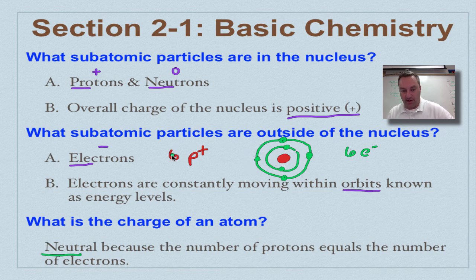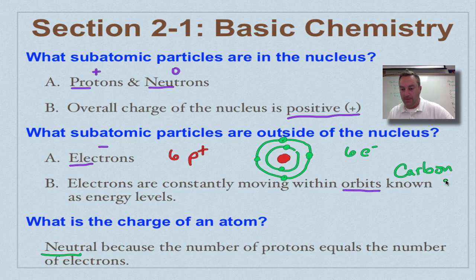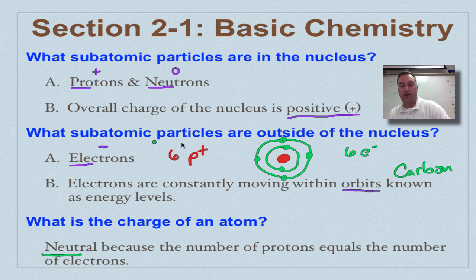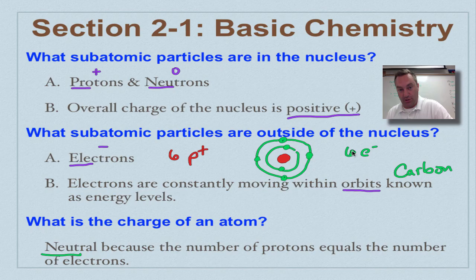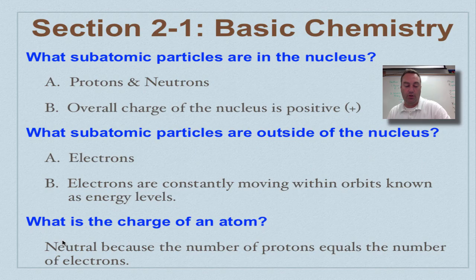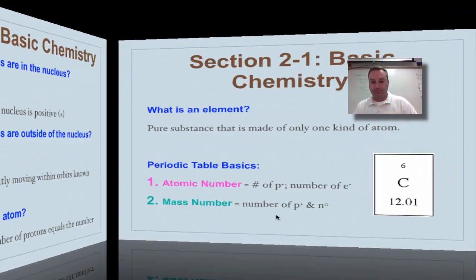In this case, because we have six protons, this happens to be a carbon atom. And we're going to learn why that is coming up shortly. Just remember, the nucleus has protons and neutrons on the inside. It has an overall positive charge. The outside of the nucleus is going to have a negative charge because it only has the electrons. Remember, electrons are in energy levels. And therefore, the negatives on the outside cancel out the positives on the inside. And it's a neutral situation.